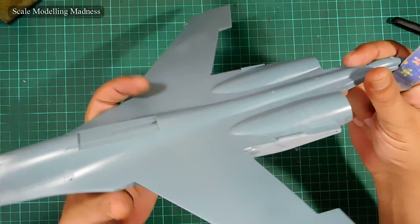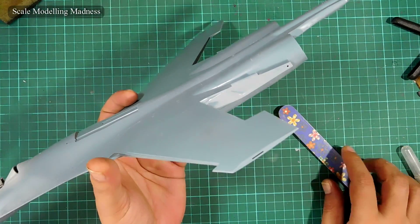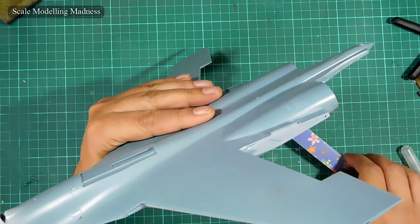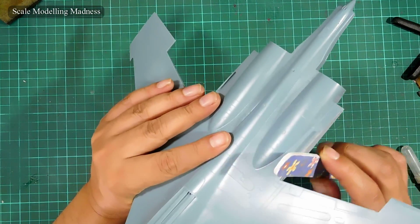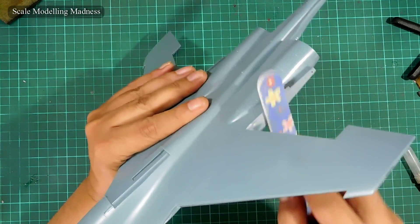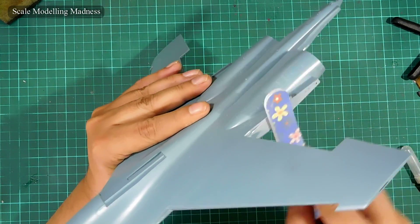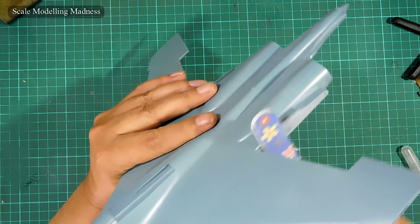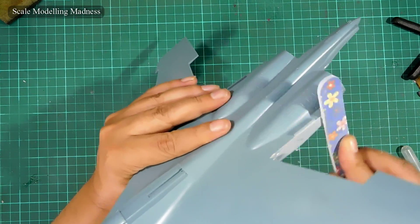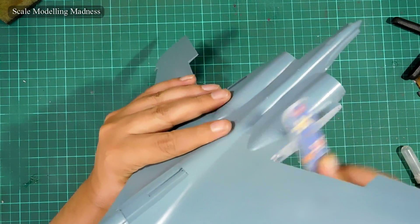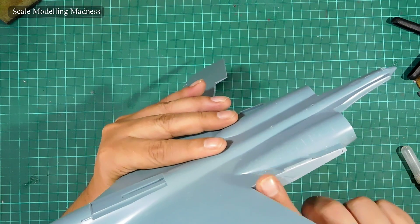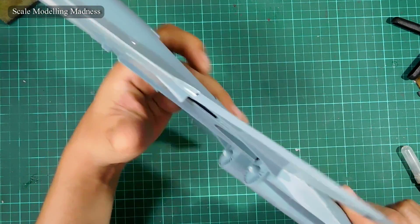I will use this sanding stick to first clean up the seam behind the wings. As I sand, I keep checking how smooth the surface is by running my finger over it every now and then.